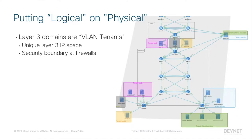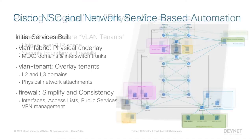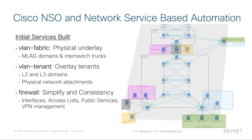Each VLAN tenant is a unique layer three IP space. To get from one tenant to another, you go through a firewall boundary to enforce security policy. So the big part was taking the logical design and mapping it into these concepts of fabric, tenant, and firewalls. This is where NSO comes in — NSO is actually how we build the description of what a VLAN fabric is, what a VLAN tenant is, and what the firewall pieces are.